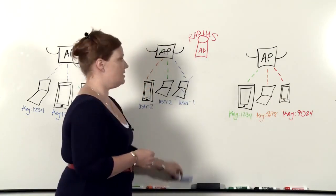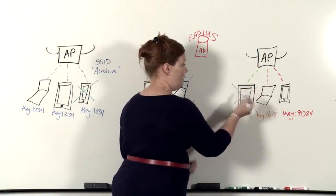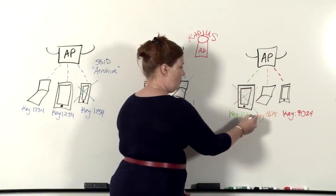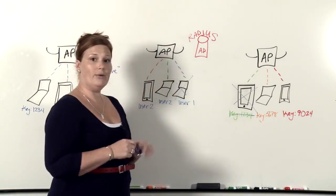And if for any reason someone would leave the network, leave the company or maybe just visiting for the day, you can de-authenticate a single key and the rest of the users will continue to connect to the network and be completely unaffected.